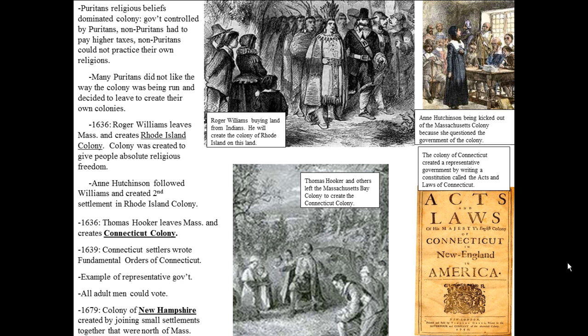Anne Hutchinson followed Williams and created a second settlement in the Rhode Island colony. She was a woman, and she got kicked out of the Massachusetts Bay Colony for being outspoken — at that time, women did not speak publicly against anything and did not have much of a voice. After she started her second Rhode Island settlement, she was killed by Native Americans.